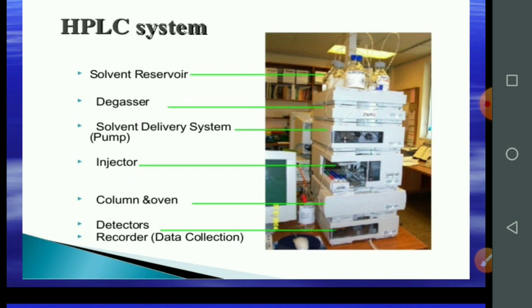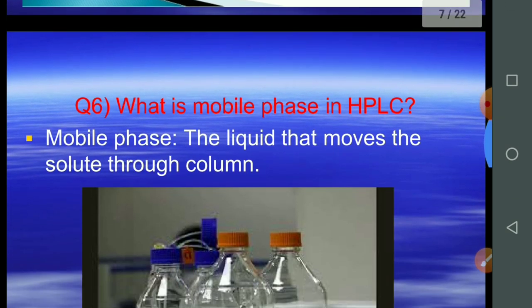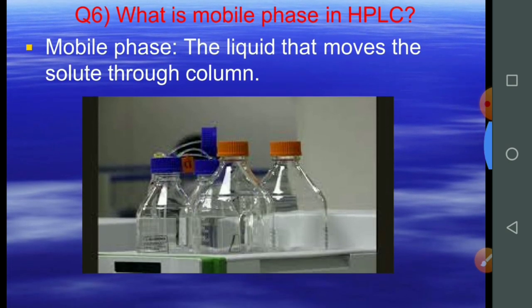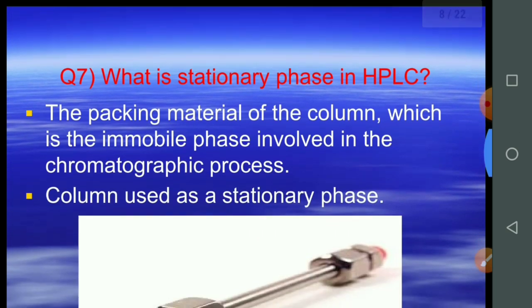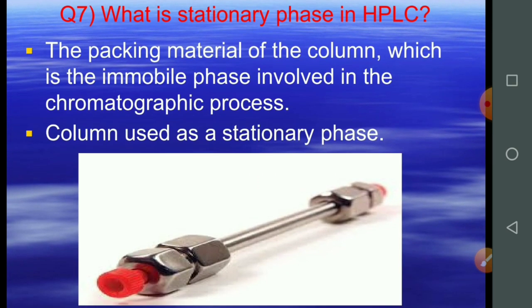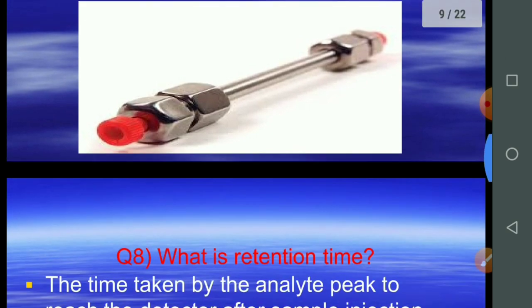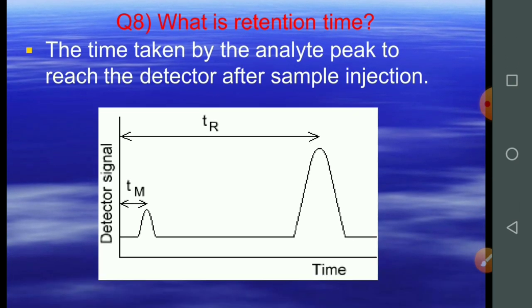In this diagram you can see all the parts of the HPLC system. Question number six: what is the mobile phase in HPLC? The mobile phase is the liquid that moves the solute through the column. Question number seven: what is the stationary phase in HPLC? The packing material of the column, which is the immobile phase involved in the chromatography process, is used as the stationary phase in HPLC.